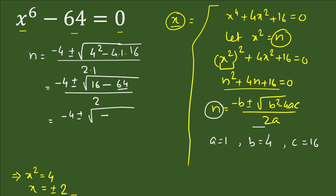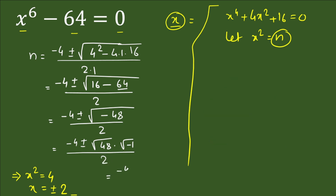Since we have a negative under the square root, we write √(minus 48) as √48 · √(minus 1). We then factor √48 as √16 · √3, and √(minus 1) is iota (i). So we have (minus 4 ± 4√3·i) divided by 2.